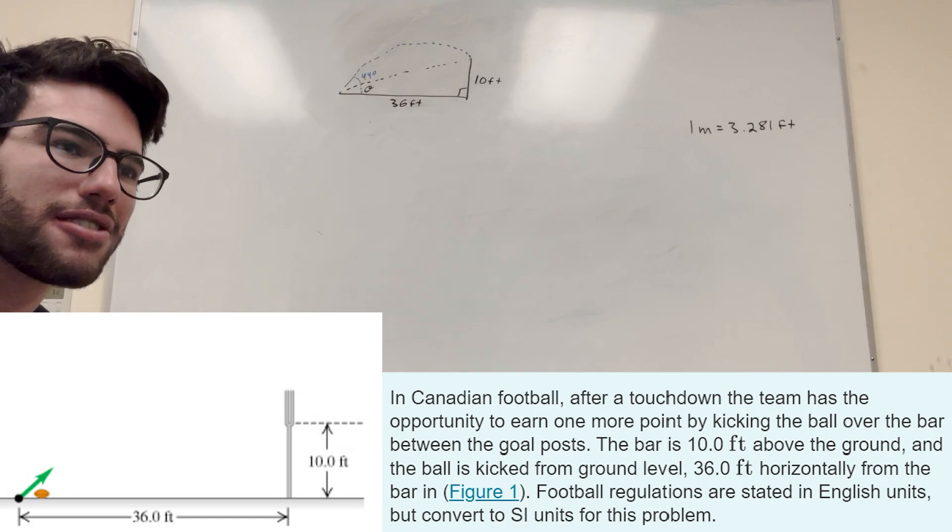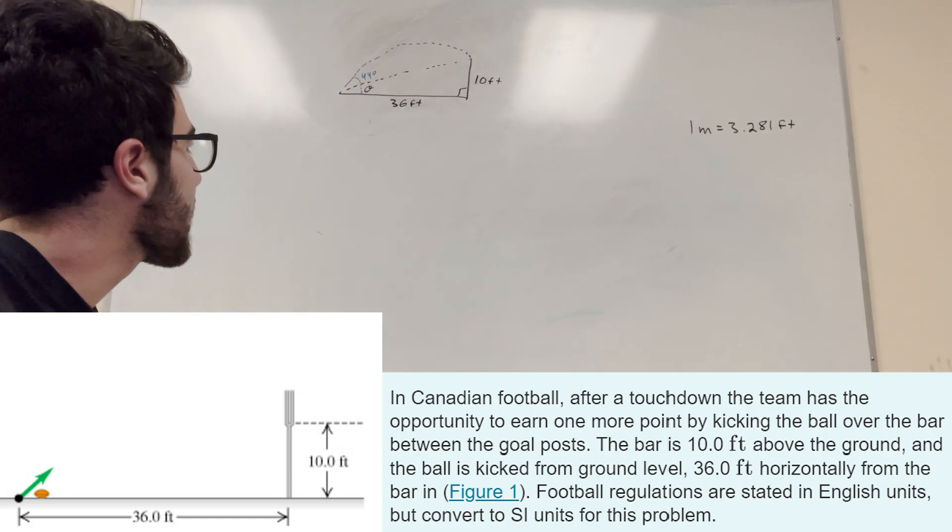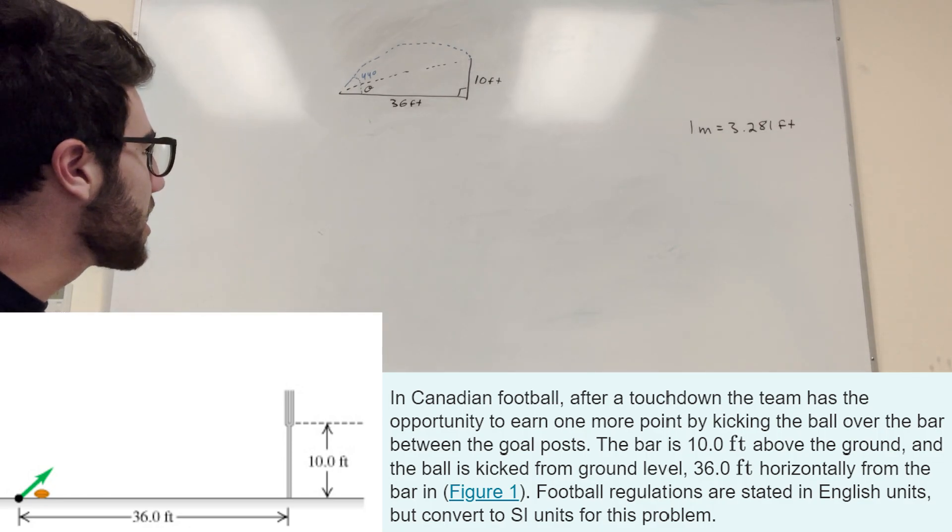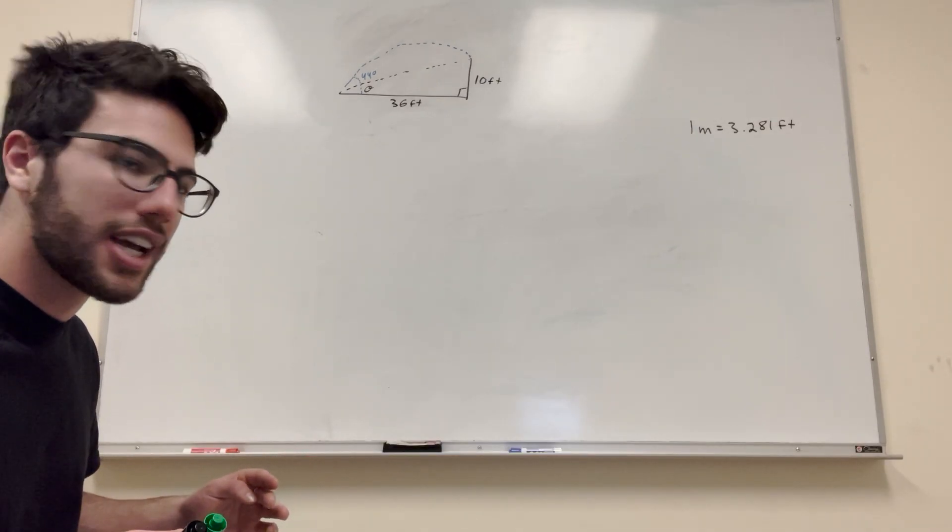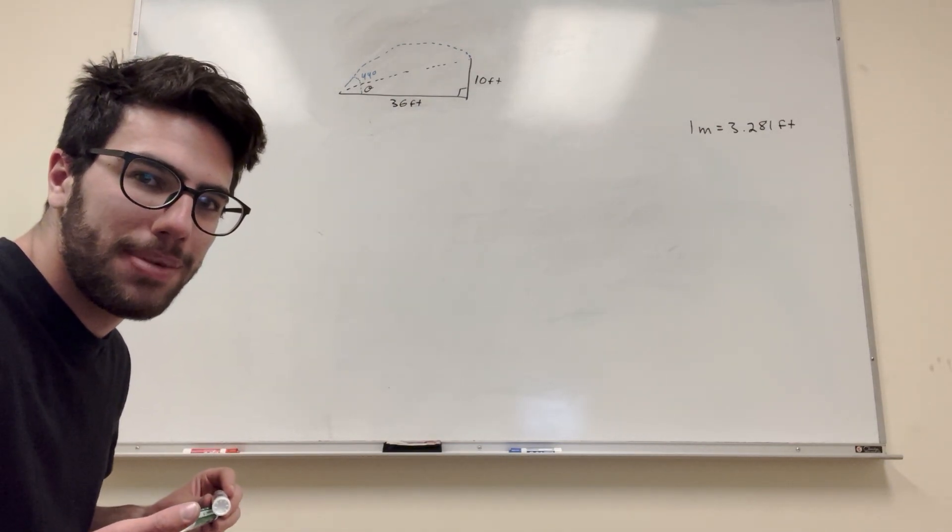So we're kicking a Canadian football. I don't really know much about Canadian football, but basically we're trying to get it over this field goal. And we have two parts of this question. First part's really easy, let's get it out of the way. It wants to know what's the minimum angle that we have to kick it, even like regardless of how fast we kick it, to get it over the angle.